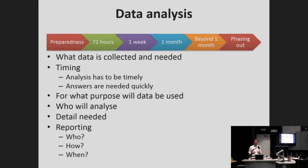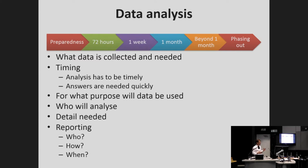What purpose is the data being used for? Is it preparation? Is it planning for something protracted? Is it for medicines — how many tablets or vials of insulin are needed? Who will analyze and what level of detail is needed to prepare a response? Then the reporting — who, how, and when. Thinking about these different phases, at the beginning — preparedness, the 72 hours, the first week — information is needed very quickly. Whereas in a protracted situation such as the UNRWA situation, the analysis is needed but not as urgently.